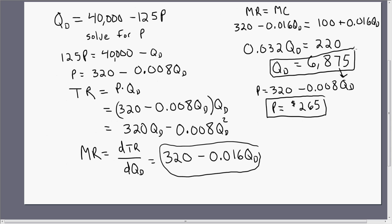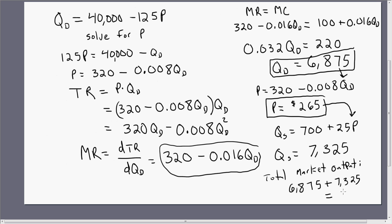The next step is just to find the market supply, the quantity supplied by the smaller firms. Let's rewrite the quantity supplied equation of the smaller firms. And all we're going to do is evaluate that equation at the price set by the price leader. And plugging 265 into that equation, you're going to get the quantity supplied by smaller firms of 7,325. So the total market output is just going to be the amount produced by the dominant firm plus the amount produced by all of these smaller firms. And this is going to equal 14,200.